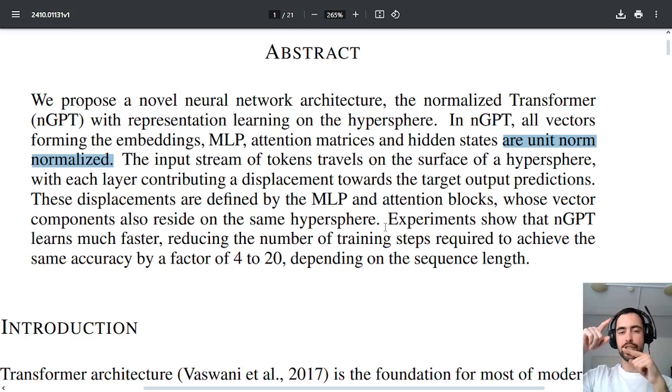And after it goes through the whole transformer and there is some rotation, then they find the closest vector of closest token to this new rotated vector and that's the token prediction.